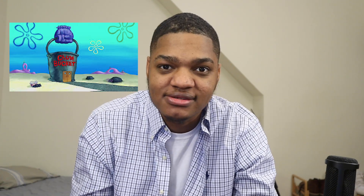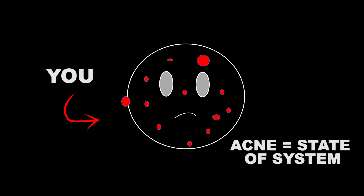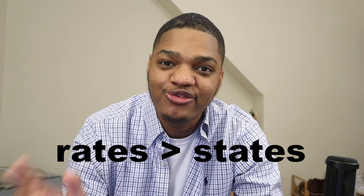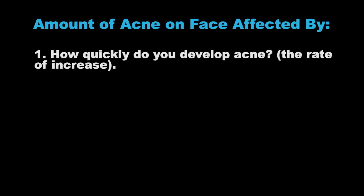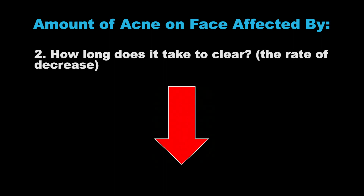No one cares about buckets, right? So let's use an example that's more relevant to a lot of people: acne. Let's say you have really bad acne. The state of the system is obviously the amount of acne on your face. You probably want to fix this, but how do you? Should you wash your face more often? Should you start a treatment plan? Thinking solely about the state of the system — the amount of acne on your face — leaves you with no way to actually solve this issue. Solving this problem has everything to do with the rates involved: how quickly do you develop acne (the rate of increase), and how long does it take to clear (the rate of decrease).